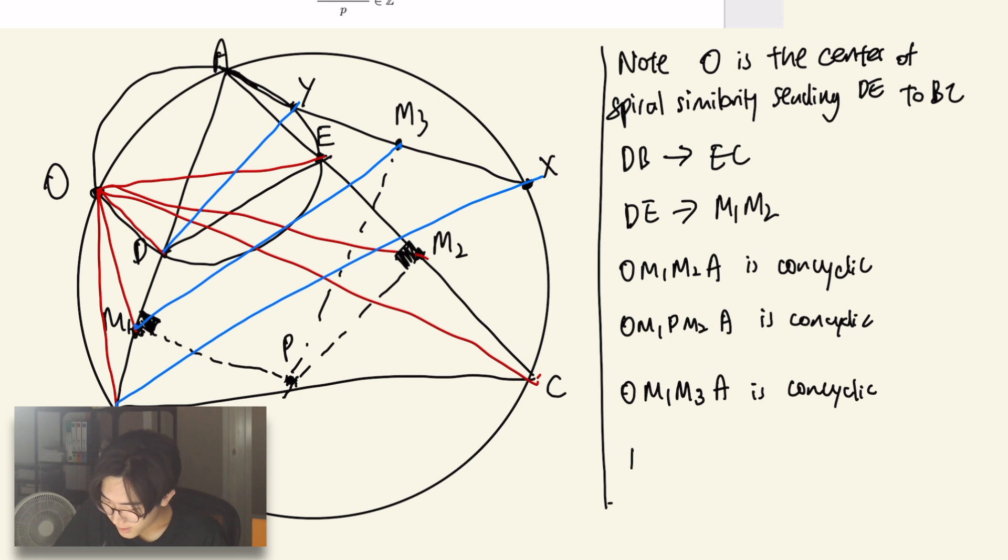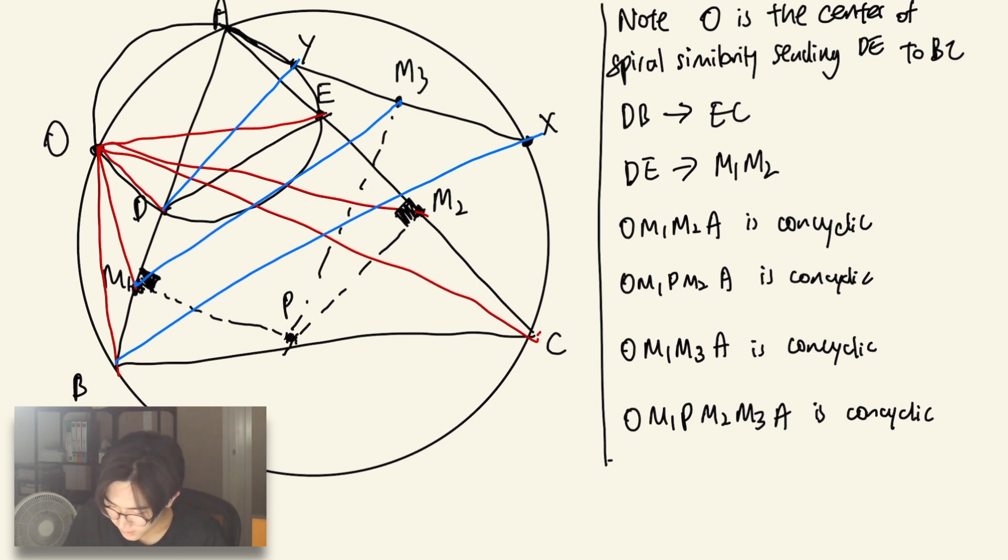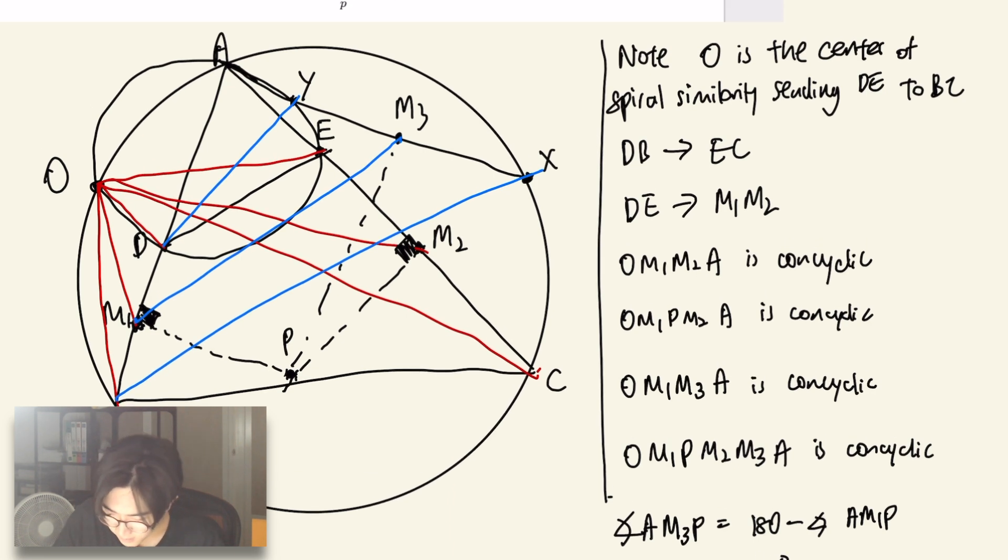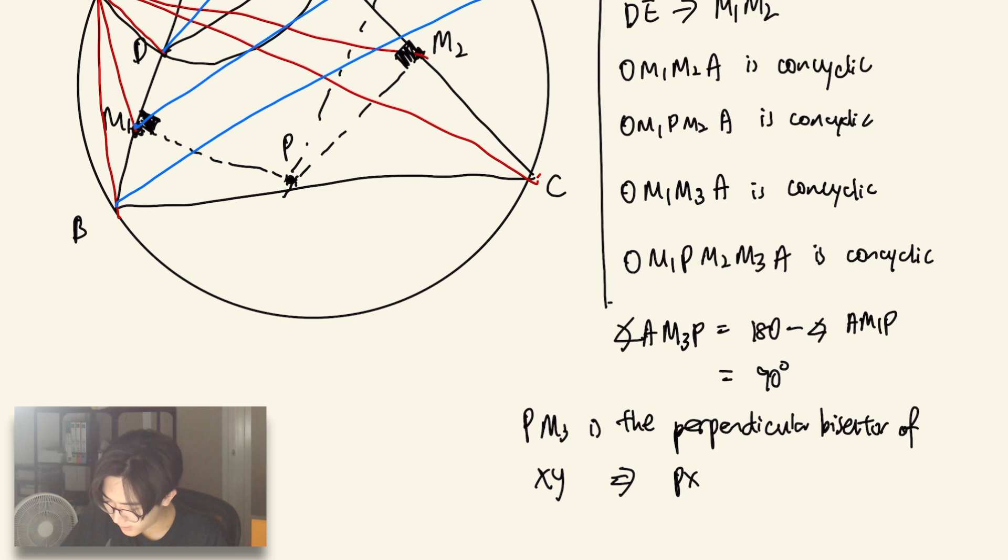So we have that O, M1, P, M2, M3, A is cyclic. Which then gives us the result that angle AM3P is equal to 180 minus angle AM1P, which is equal to 90 degrees. Which means that PM3 is the perpendicular bisector of XY, which then implies that PX is equal to PY.